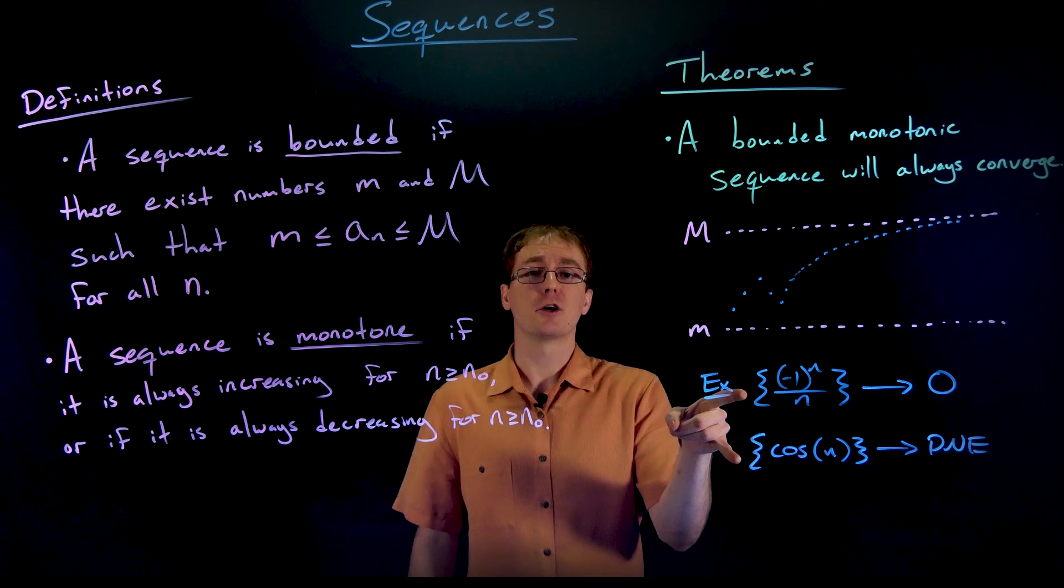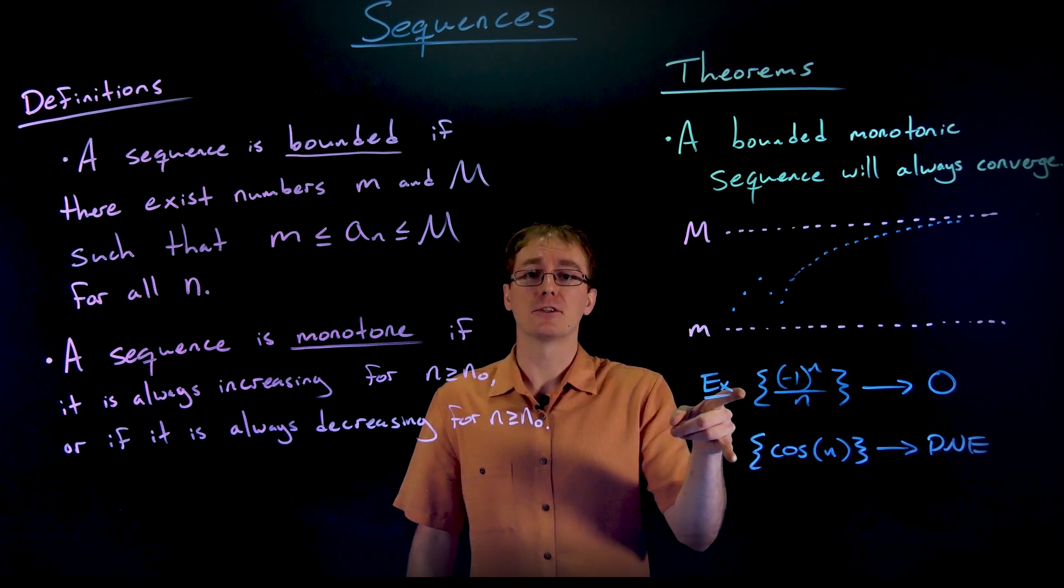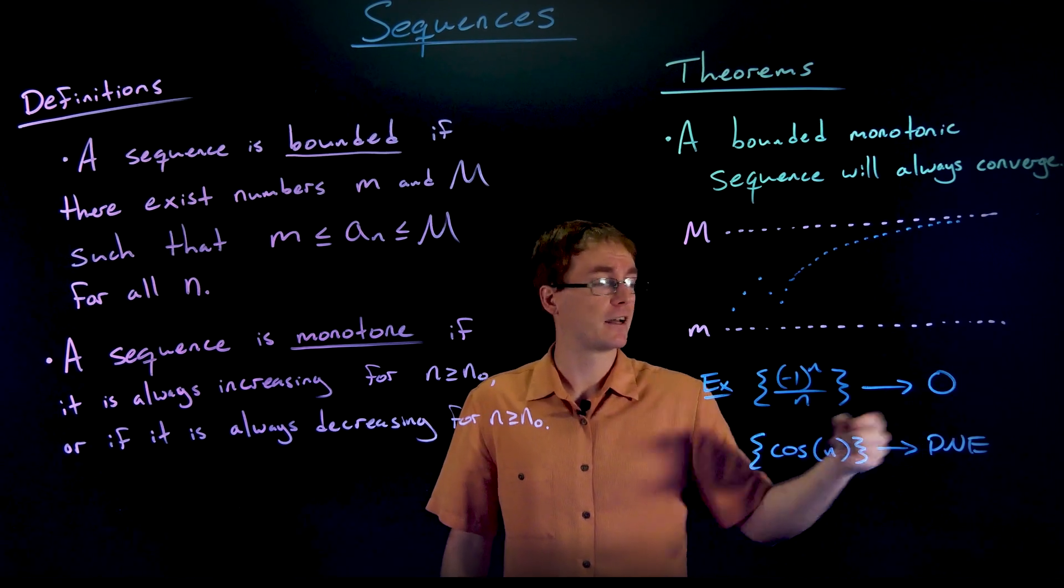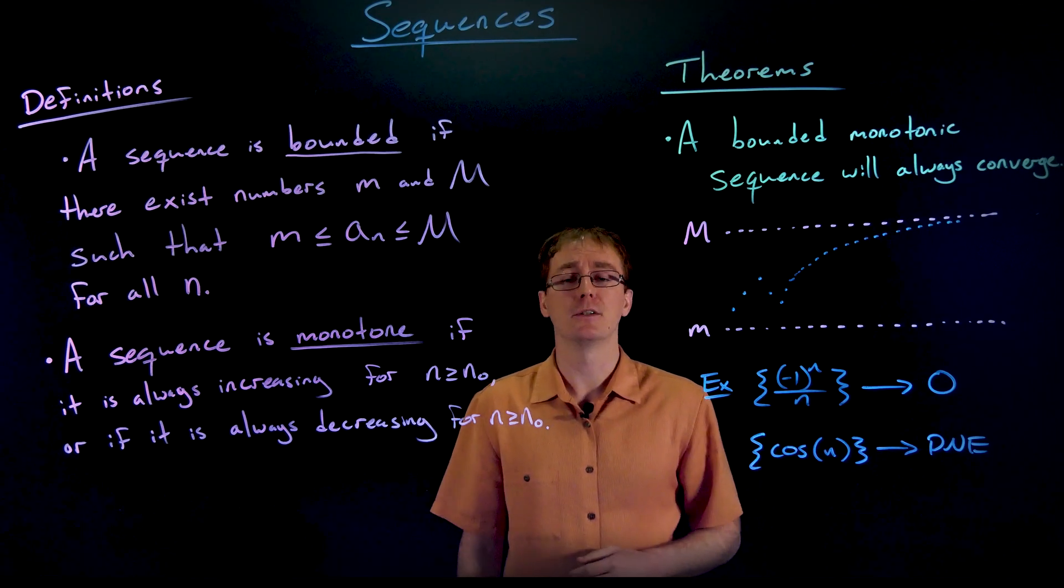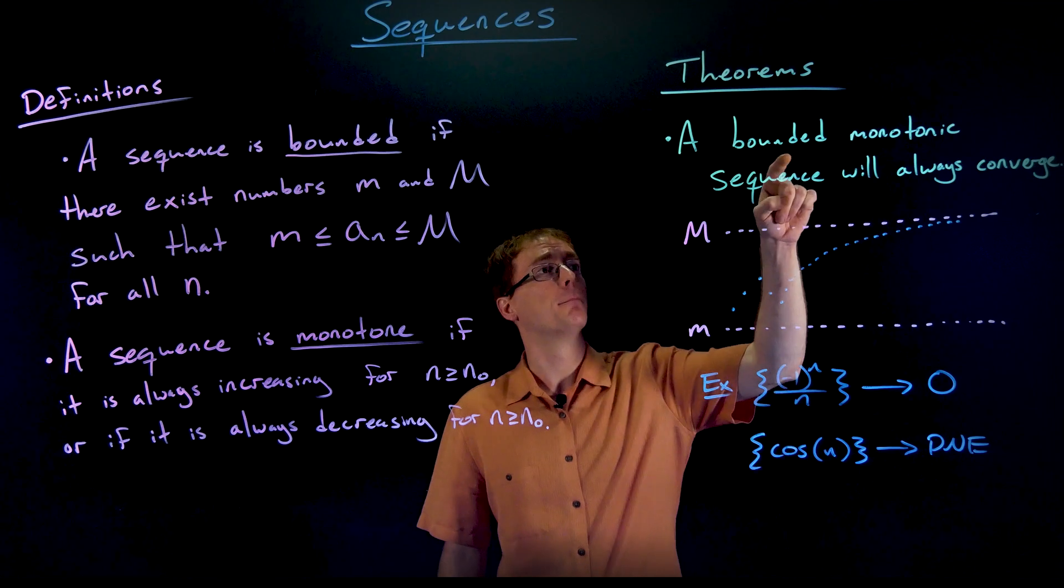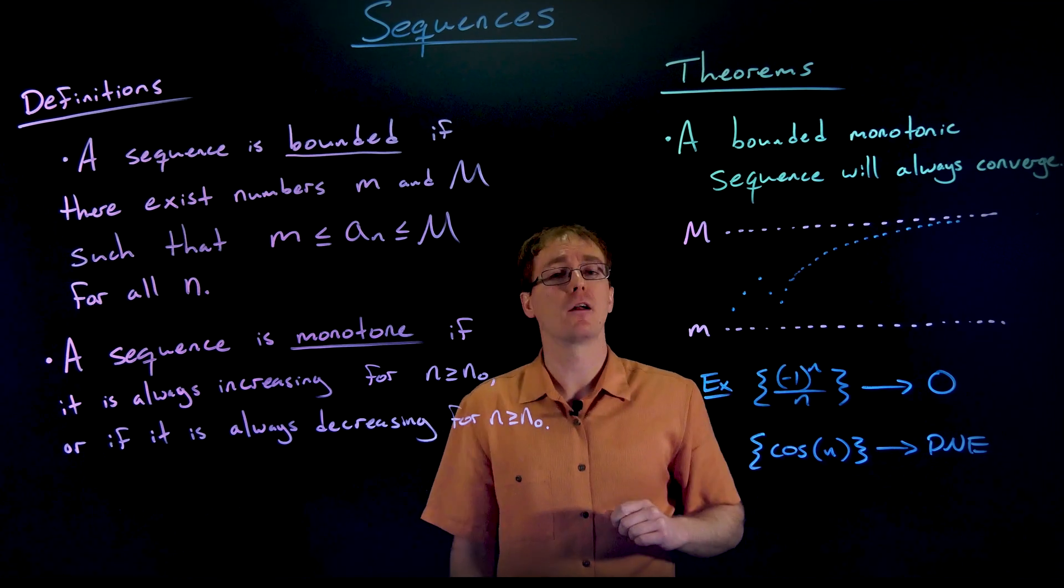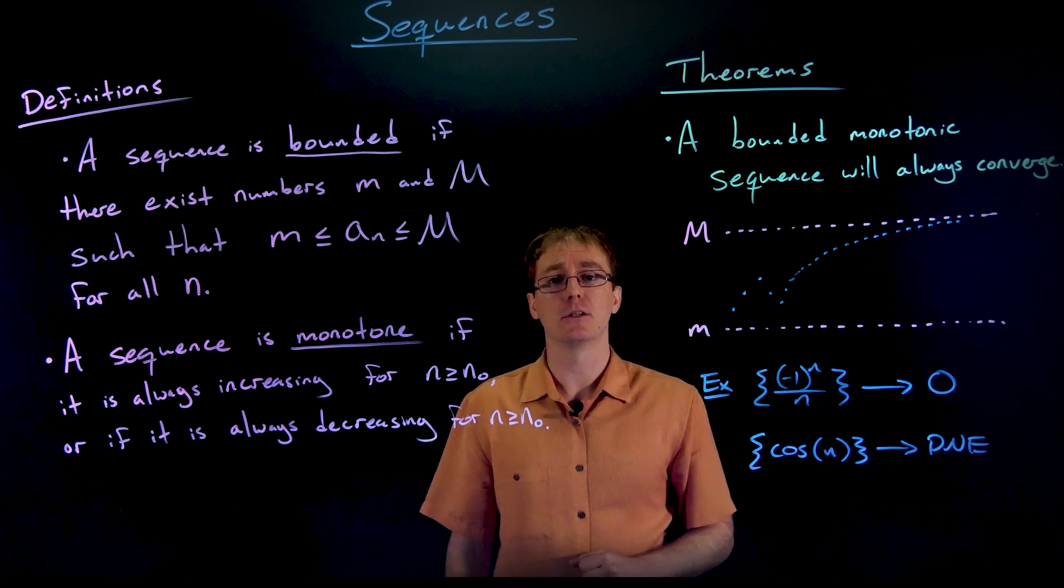So both of these are bounded. Neither of them are monotonic and we can't have any kind of final or general statement about their convergence. Either can happen just depending on the sequence itself. Only if we are both bounded and monotonic are we guaranteed that the sequence will converge.